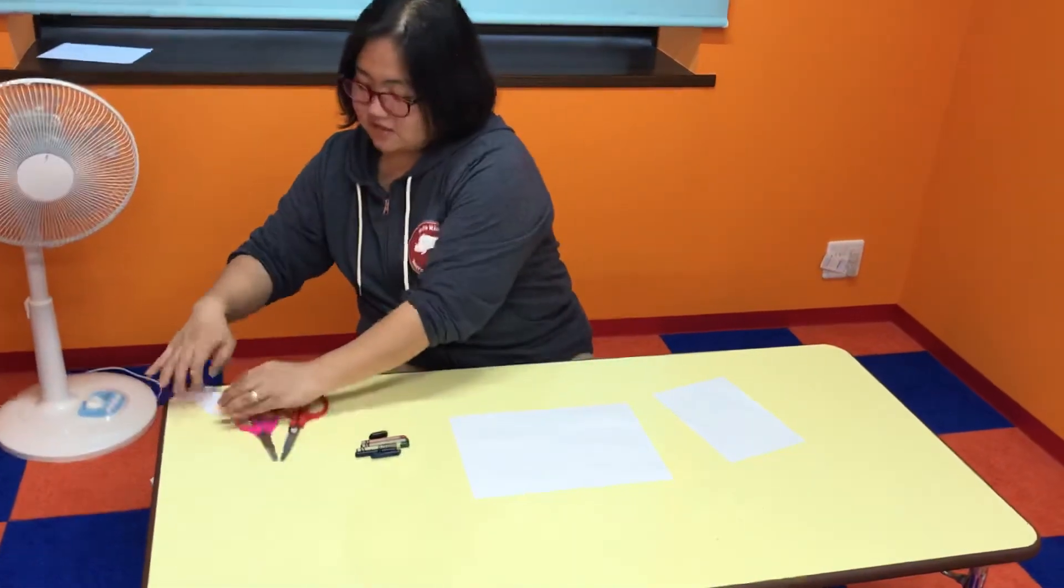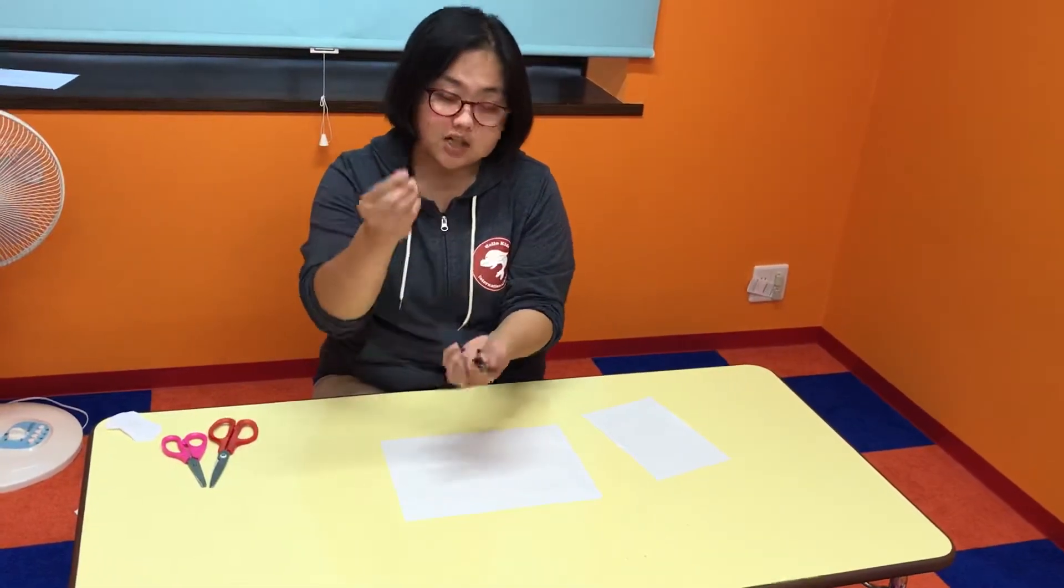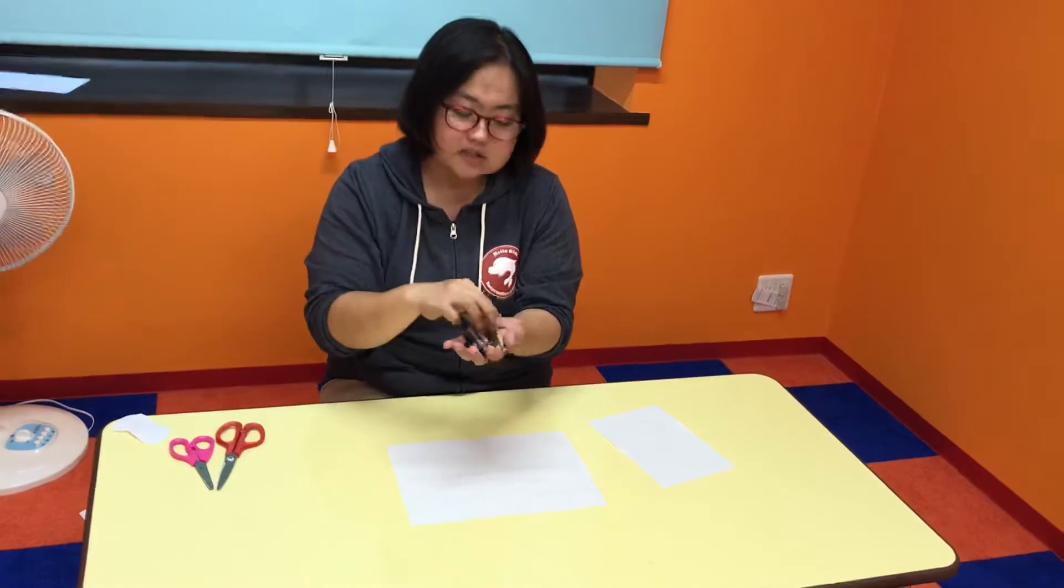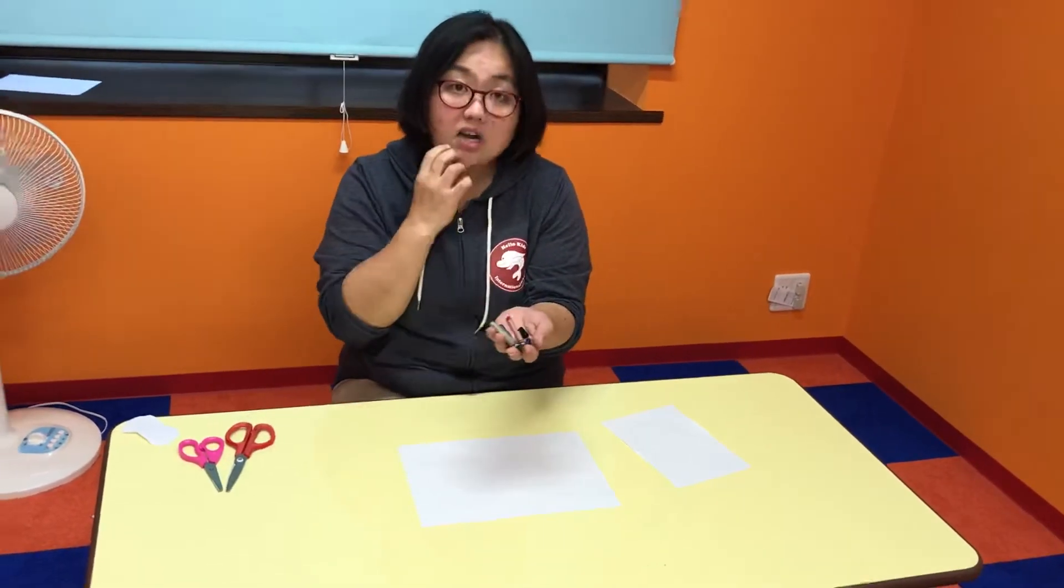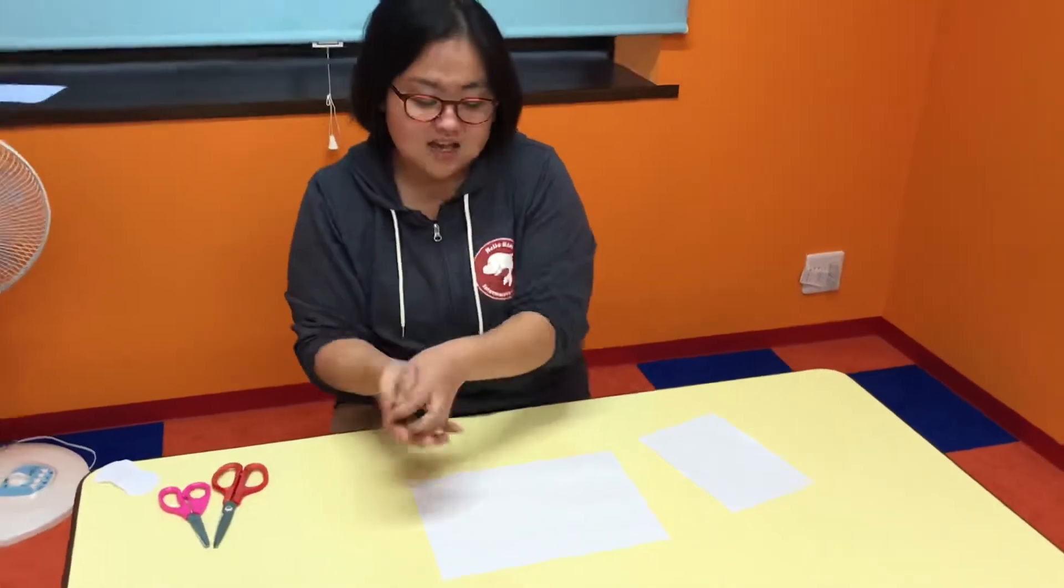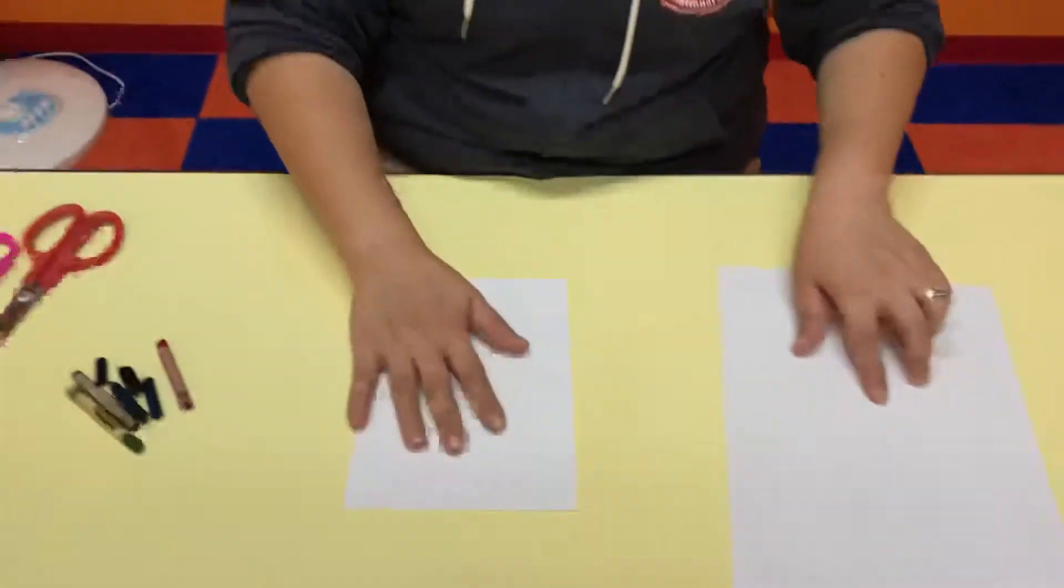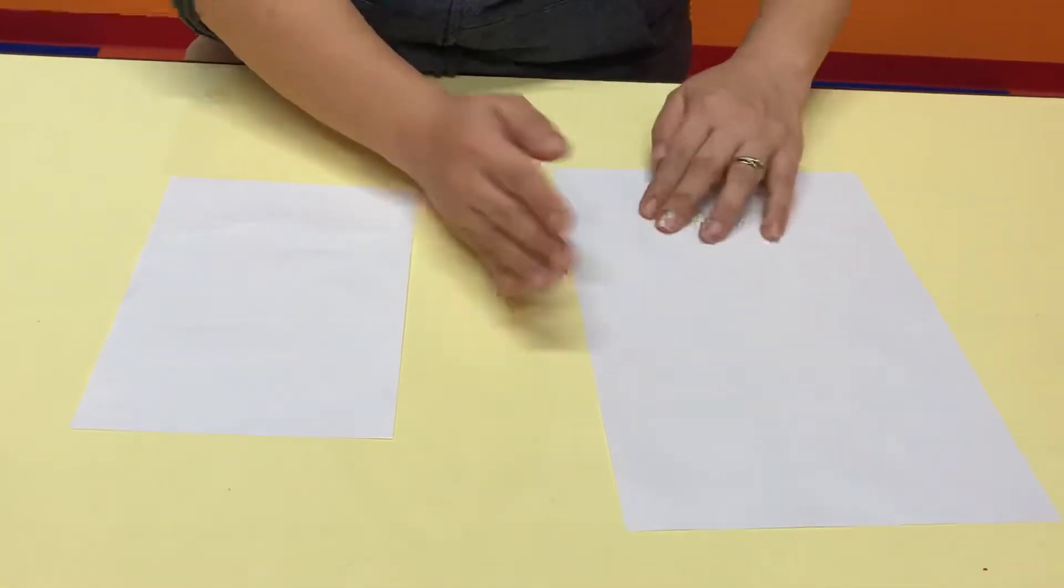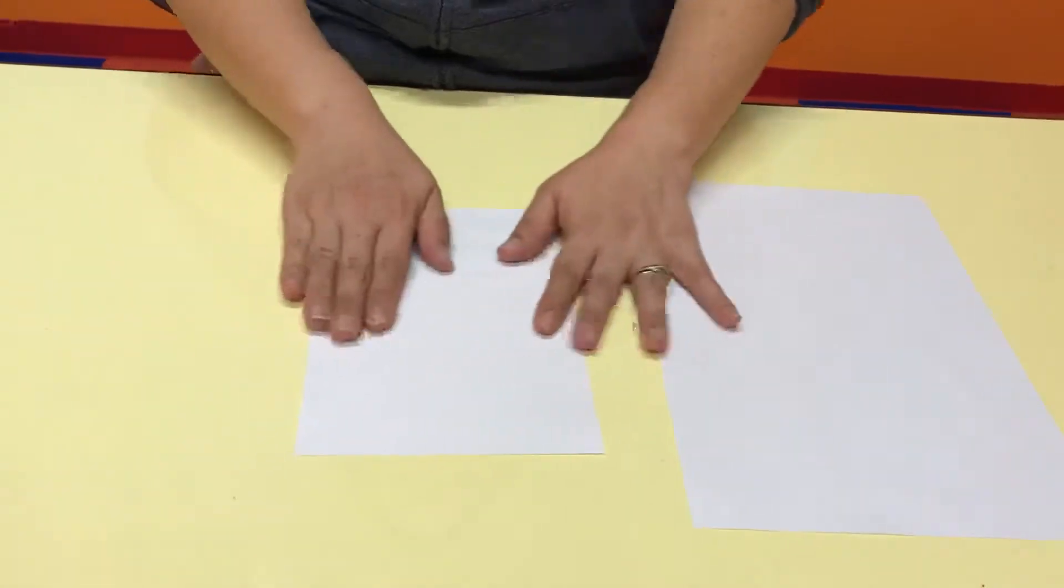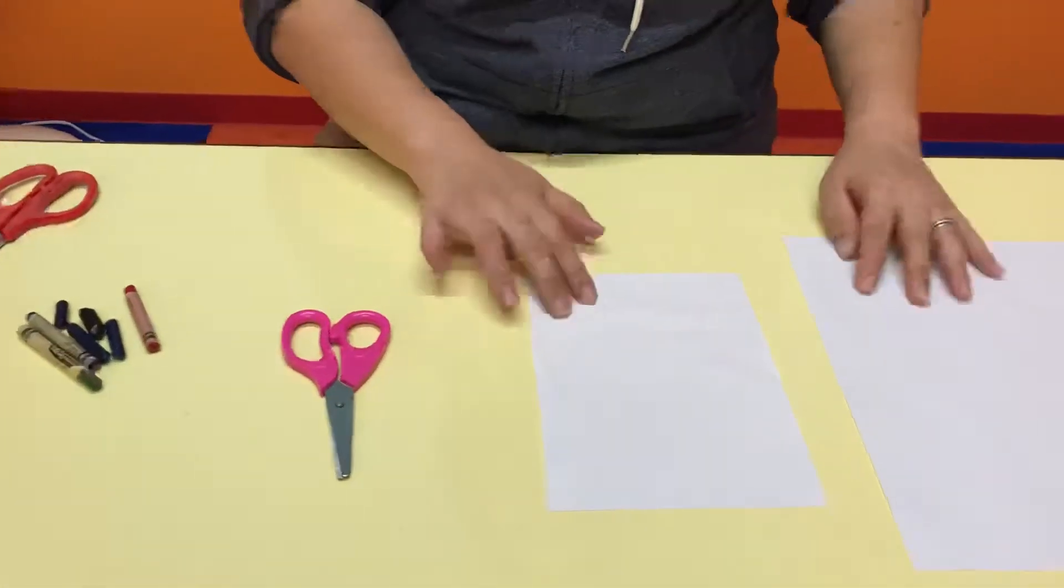You need crayons - the darker the better, like dark purple, dark green, and dark blue. Dark colors are better. You need two pieces of paper: one A4 or a bit bigger, and one smaller. You also need scissors.